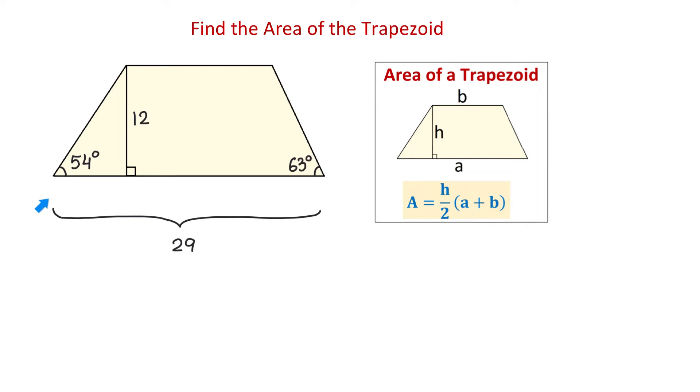Let's call this trapezoid A, B, C, and D. Also, let this point be point E. Then, because the height is perpendicular to the base, here to the left, the triangle A, E, D is a right triangle.